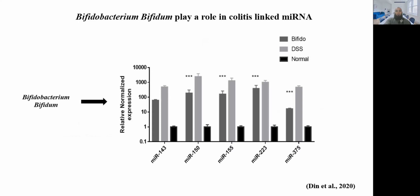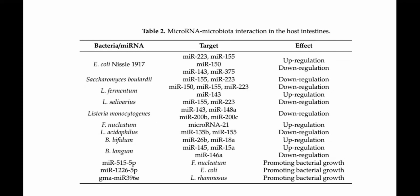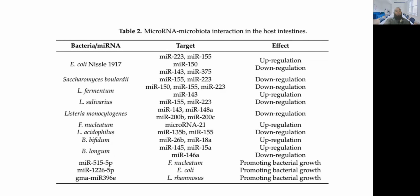It is important to mention that there are other specific probiotic strains people have worked with, such as E. coli Nissle, Saccharomyces boulardii, and other strains. They have specific target miRNA and either down-regulate or up-regulate those specific miRNA and their target genes. There are also specific miRNA that target specific bacterial strains and either promote or inhibit their growth.